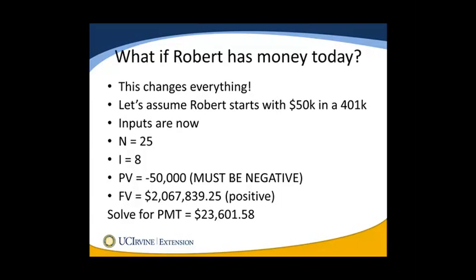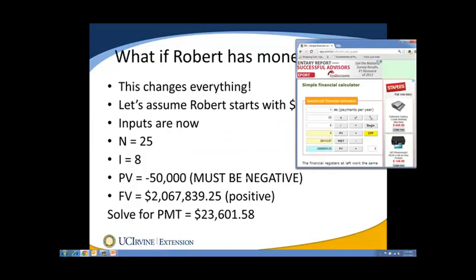If Robert has money today, that changes everything. If we assume Robert started with $50,000 in his 401(k), we would change the inputs slightly. We still use N=25 and I=8%. However, now PV=$50,000 — we're starting with $50,000. Note it must be entered as negative because PV and PMT must be in the same direction, so that we get a positive future value — think of it as money coming from your pocket. Solving for PMT, we get negative $23,628, which is basically $5,000 less because Robert is starting off with some money today.